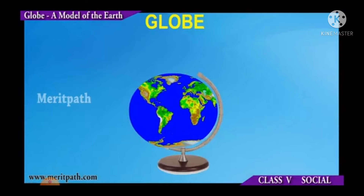Myself, Deven Srivastu. I will teach social science of class 5th. Children, you know how big our world is and there are so many countries in our world. If we need information about all the countries of the world, how can we see? The only way to see all the countries is by globe. Do you know what is the name of the chapter? Yes, the name of the chapter is Globe, chapter number 1.